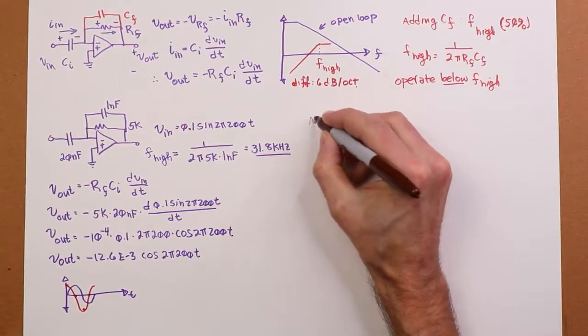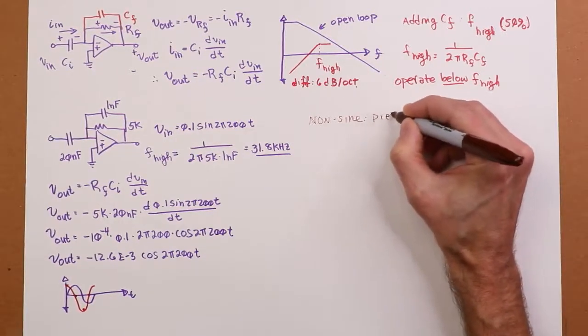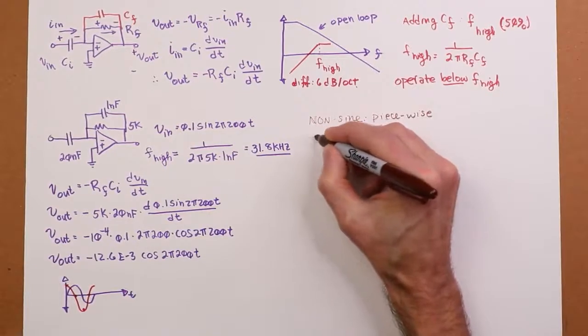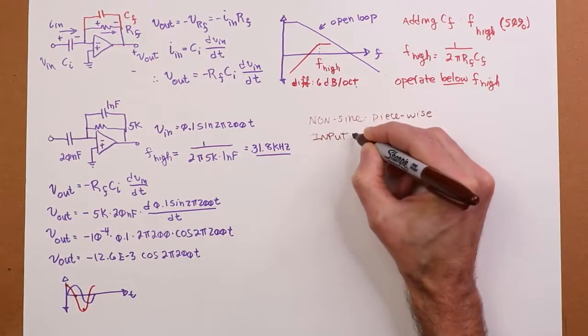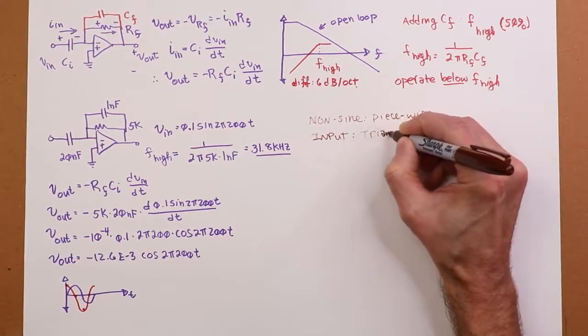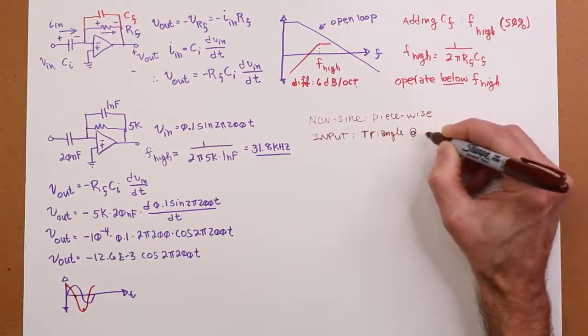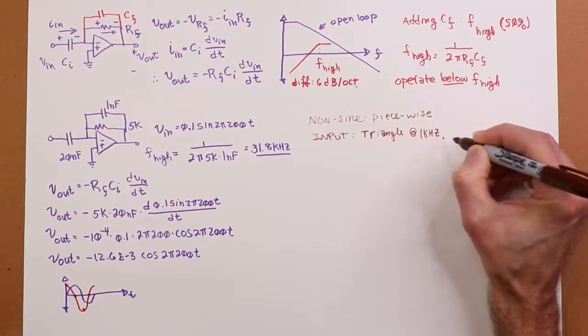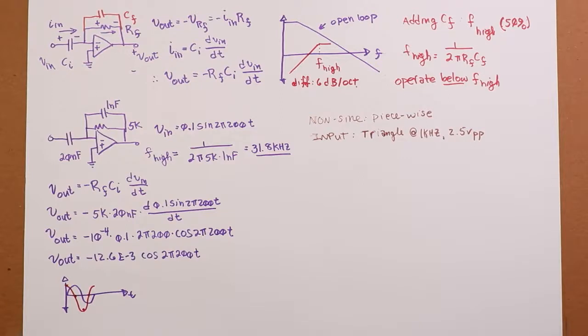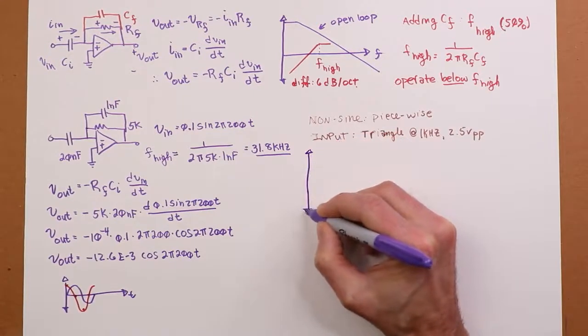So if it's non-sine, what we'll do is this piecewise approach so that we can see what it looks like. As an example, for an input, we'll use a triangle wave. Let's make this 1kHz and 2.5 volts peak to peak, 1 and a quarter volts peak.